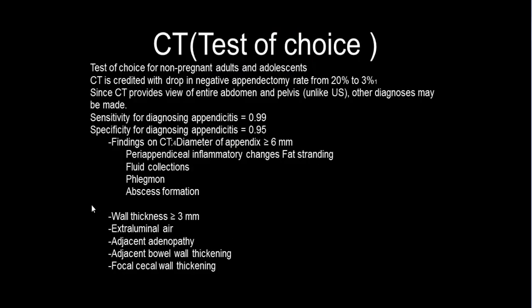CT is the test of choice for acute appendicitis in non-pregnant adults and adolescents. CT has been credited with a drop in the negative appendectomy rate from more than 20% to 3%. Since CT provides a view of the entire abdomen and pelvis — unlike ultrasound — other diagnoses may also be made. Sensitivity for diagnosing appendicitis by CT is 0.99, and specificity is 0.95.